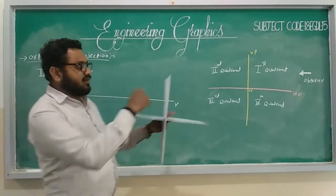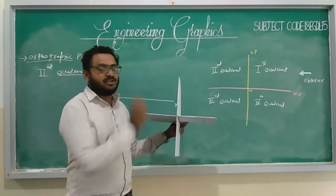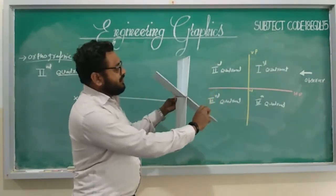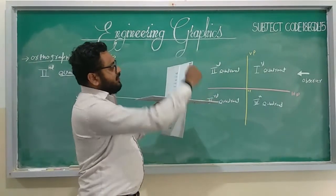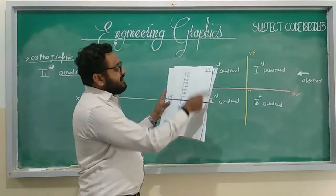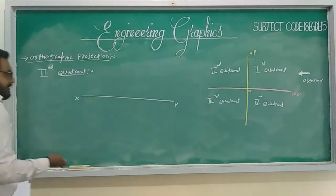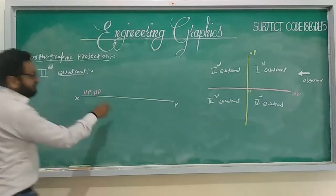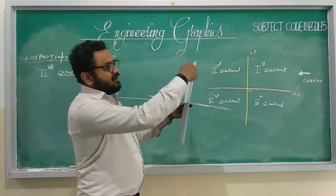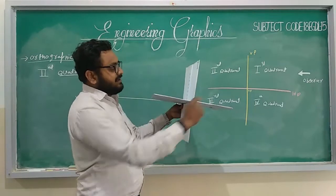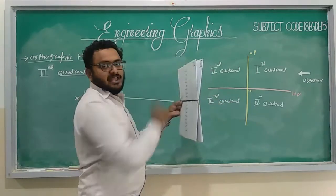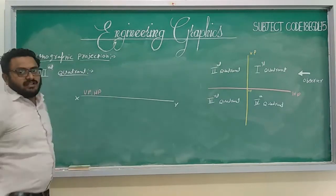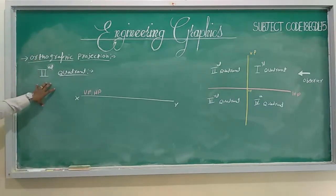Now coming to the second quadrant — how will the views appear? Where will the horizontal plane and vertical plane be? In the second quadrant, we rotate the horizontal plane clockwise. VP is already above the XY line, and when you rotate clockwise, HP will also go above the XY line. So both VP as well as HP will be above the XY line. That means both the top view and front view come above the XY line. This is the representation of the second quadrant in 2D.